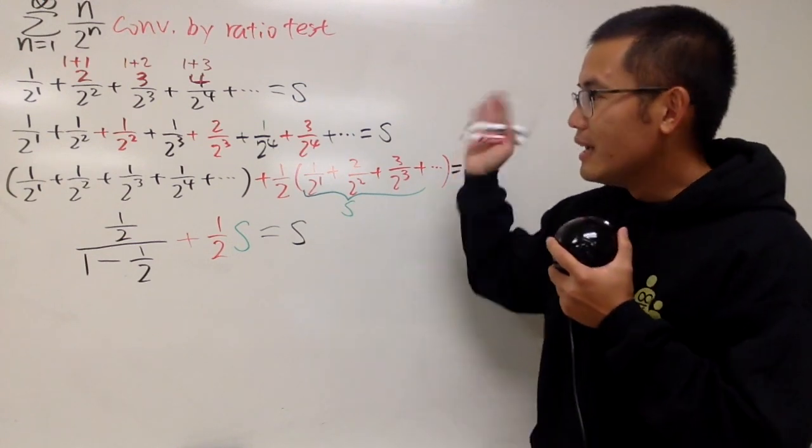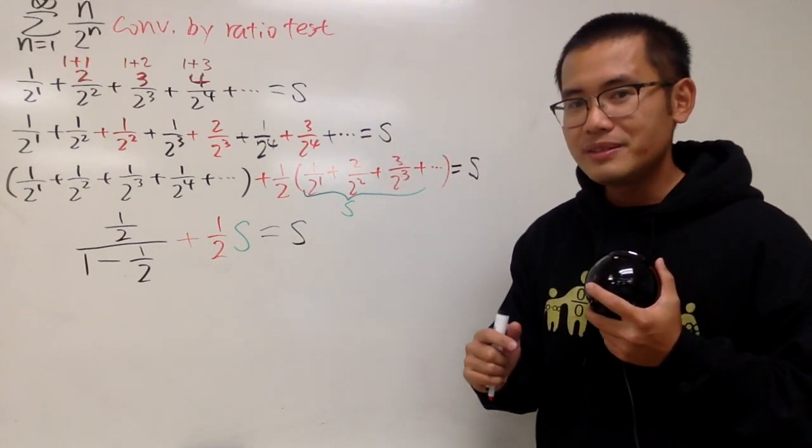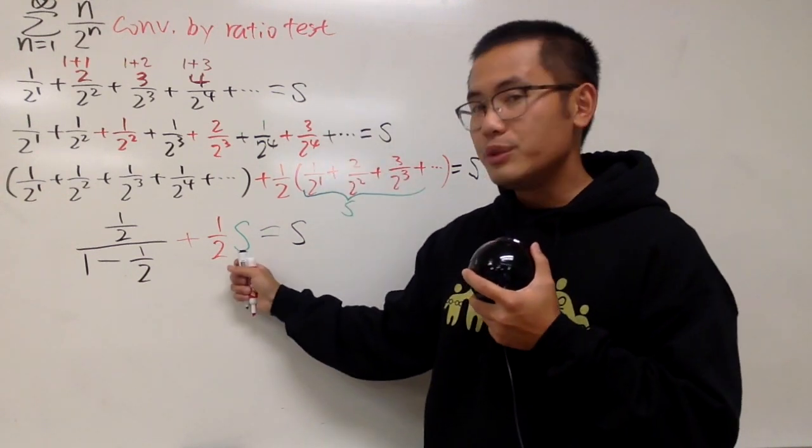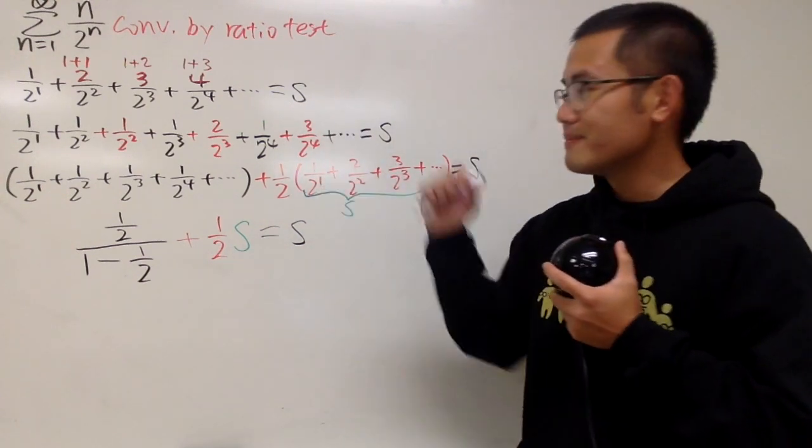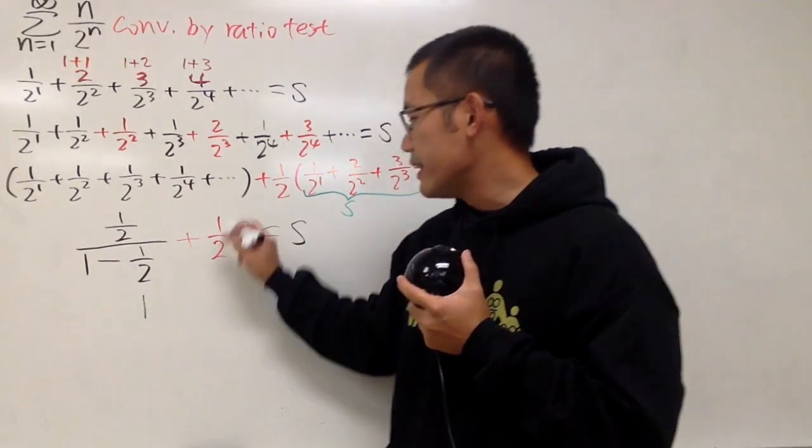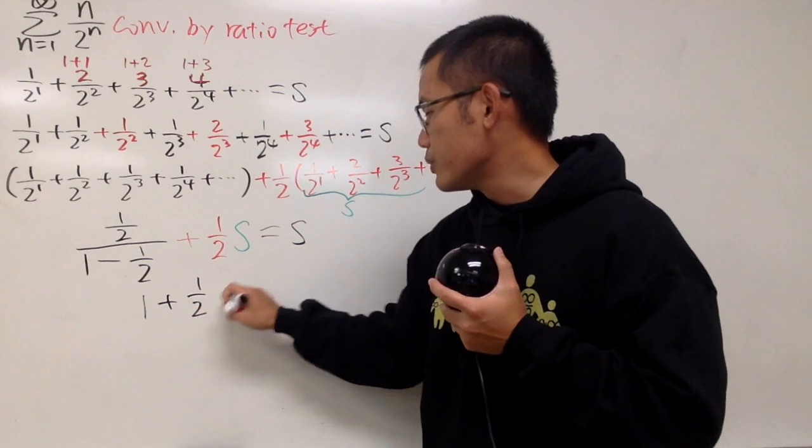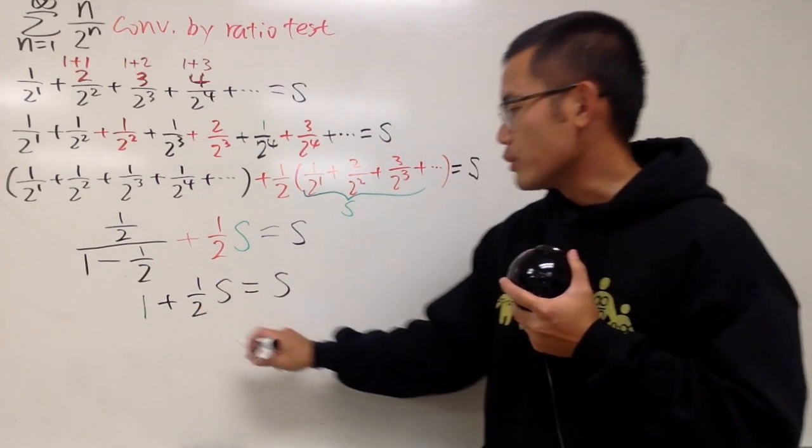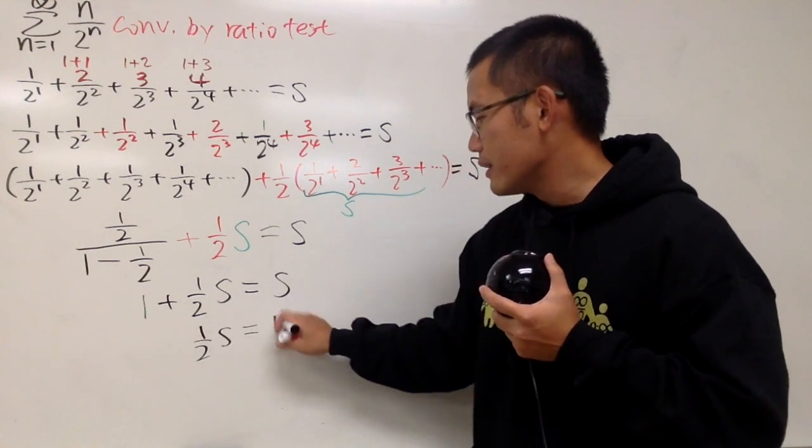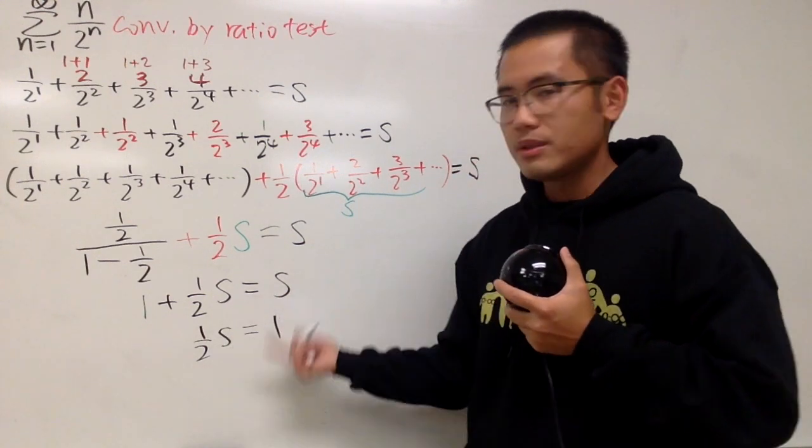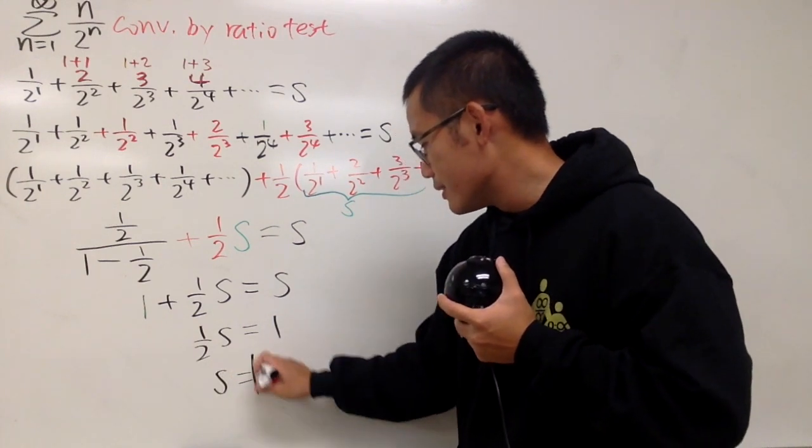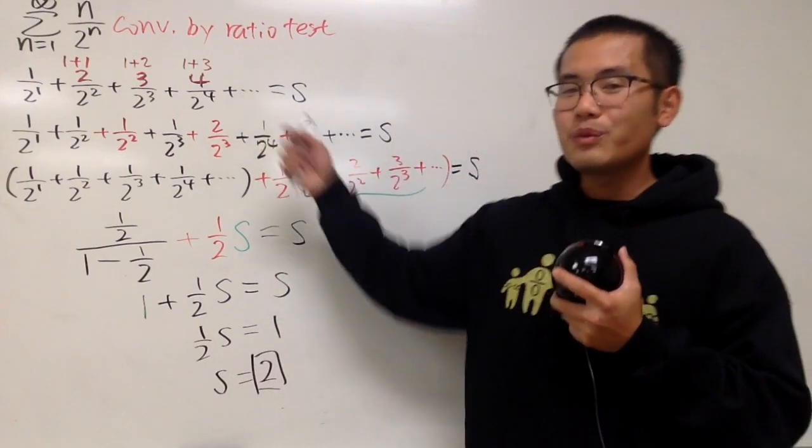So this is what I mean by, sometimes when we have an infinite series, the original S, you can break it apart, and you'll see the infinite series inside of itself. We can work this out, and we'll just get 1, and then this is plus 1 over 2S equals S. Minus 1 half S on both sides, so we have 1 half S equals 1. Multiply both sides by 2. S is equal to 2. So that means that was equal to 2. Very nice.